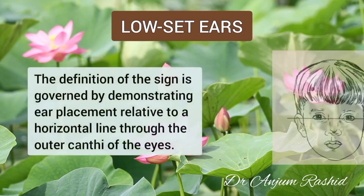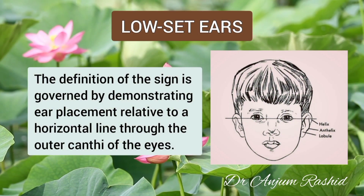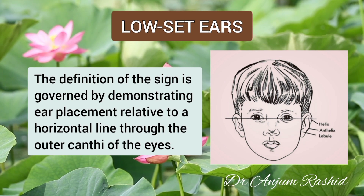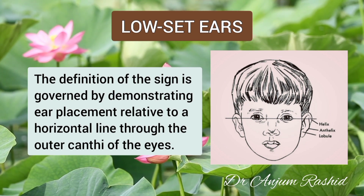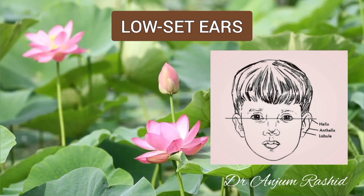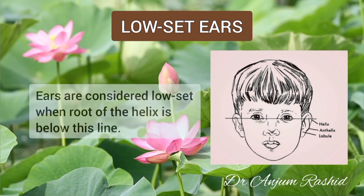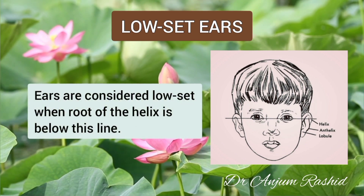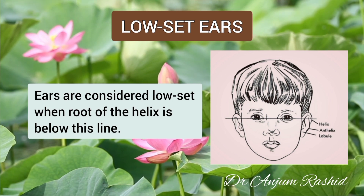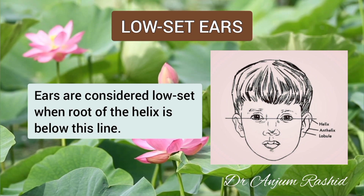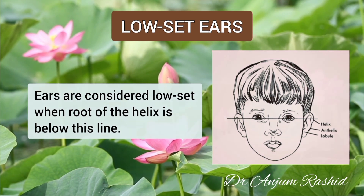The definition of this sign is governed by demonstrating the ear placement relative to a horizontal line through the outer canthi of the eyes. Ears are considered low-set when the root of the helix is below this line, as you can see in the picture.